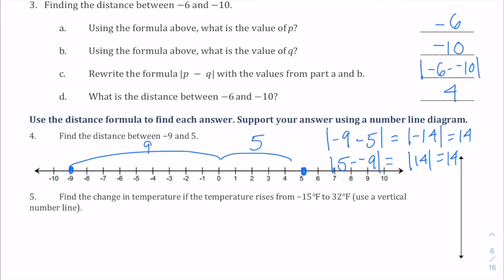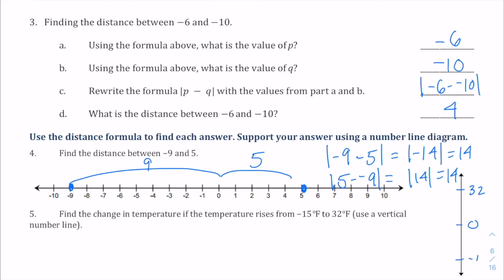One last problem. Let's find that change in temperature if the temperature rises from negative fifteen to thirty-two degrees Fahrenheit. And we can use the vertical number line here. So I'll throw zero there, thirty-two up there, and negative fifteen there.